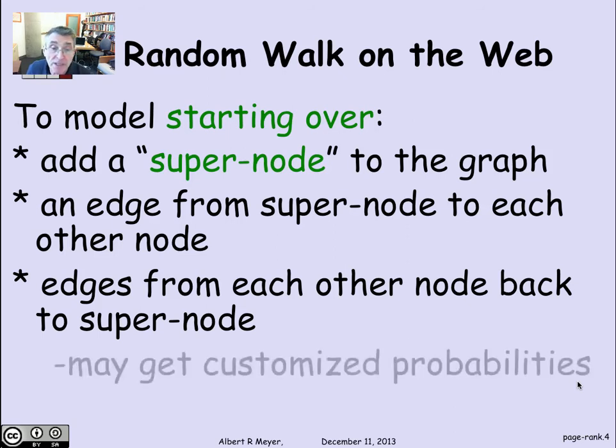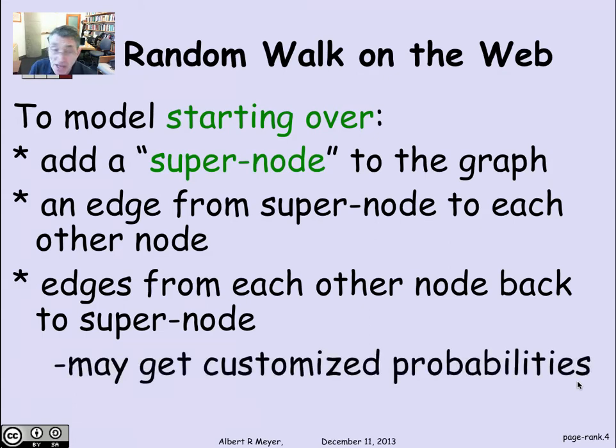Page and Brin and their co-authors in the original paper on PageRank suggested that the edge back from a vertex to the super vertex might get a special probability, customized as opposed to being equally likely with all of the other edges leaving a vertex. In fact, I think they decided that there should be a 0.15 probability from each vertex of jumping at random to the super node.